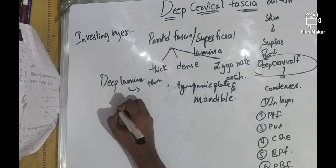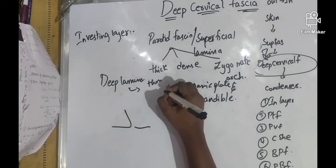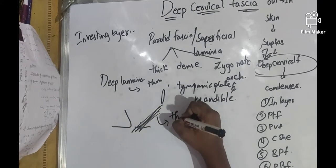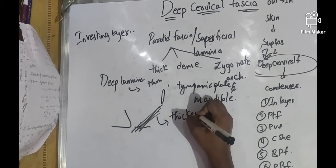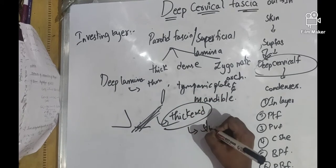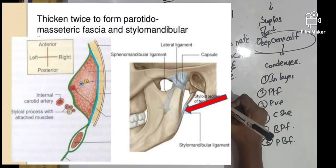Between the angle of the mandible and the styloid process, the deep lamina thickens. The deep lamina thickens and forms the stylomandibular ligament.